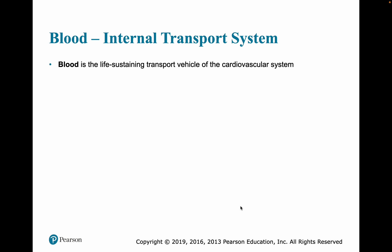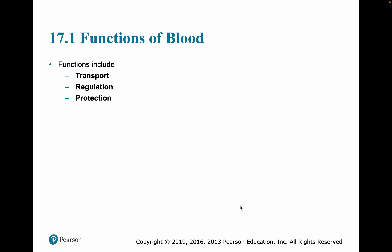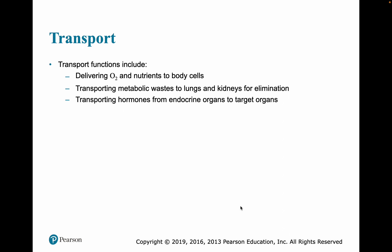Blood can be thought of as an internal transport system for the body — our major internal transport system and a life-sustaining part of the cardiovascular system. Blood functions include transportation of materials, regulation through temperature effects and hormone delivery, and protection. Blood transports oxygen and nutrients to body cells, metabolic waste to the lungs as carbon dioxide and to the kidneys as nitrogen-containing waste, and hormones from endocrine organs to target organs.